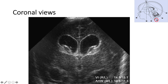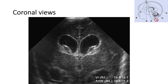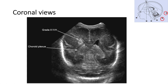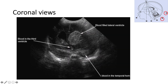This is an example of dilated ventricles on the coronal view. Moving backward, you see the body of the lateral ventricle on each side, with the bright choroid plexus inside it. This is grade two IVH when you see bright clot extending inside the ventricle. This is more blood, and this is grade three IVH.